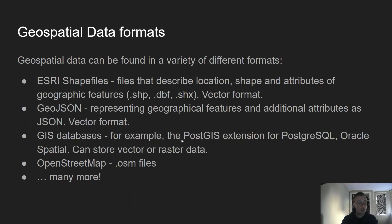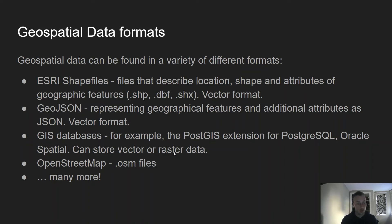The one I like most is PostGIS, which is an extension for PostgreSQL — a very popular open-source database with a great spatial extension. Other databases like Oracle have Oracle Spatial, and there are others for MySQL. These can store raster as well as vector data. OpenStreetMap is a very common open mapping API, and you have .osm files as another common data format. There are hundreds of formats, but these are the most common ones to know.